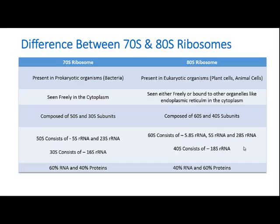Now let's look at the differences between 70S and 80S ribosomes. The 70S ribosome is present only in prokaryotic organisms, whereas the 80S ribosome is present in eukaryotic organisms like plant cells and animal cells. The 70S ribosome is found freely in the cytoplasm, whereas the 80S ribosome is seen either freely in the cytoplasm or bound to organelles like the endoplasmic reticulum or the nuclear membrane.